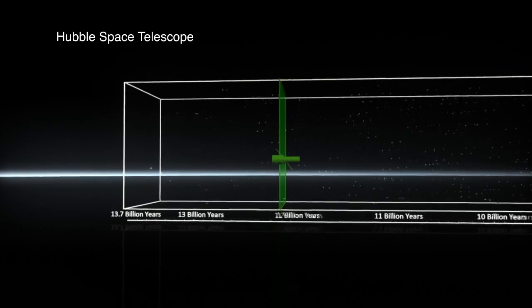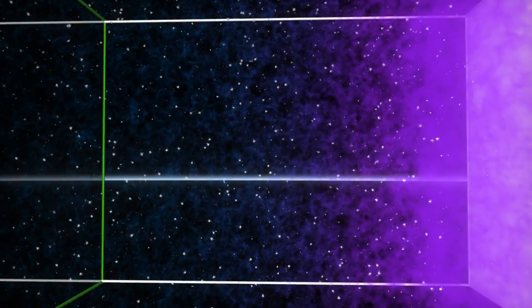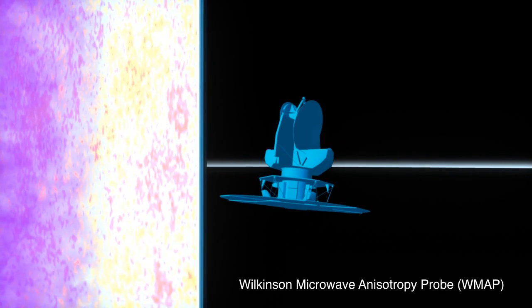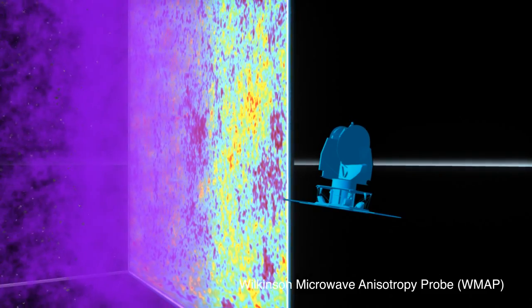The famous Hubble Space Telescope has allowed us to look back when galaxies were still in the process of forming. The WMAP provided us with an amazing view of the cosmic microwave background, the afterglow from the Big Bang.